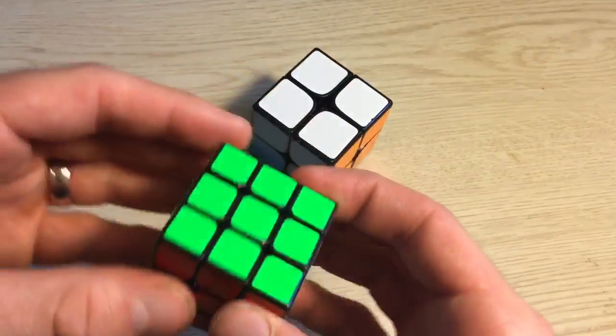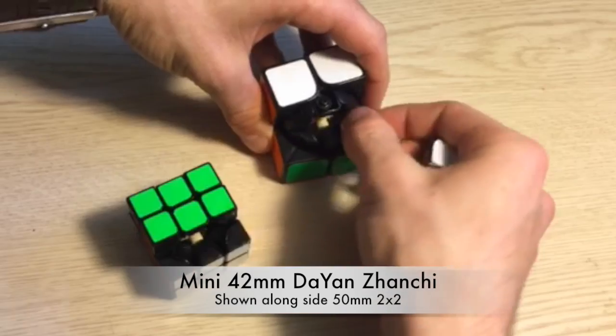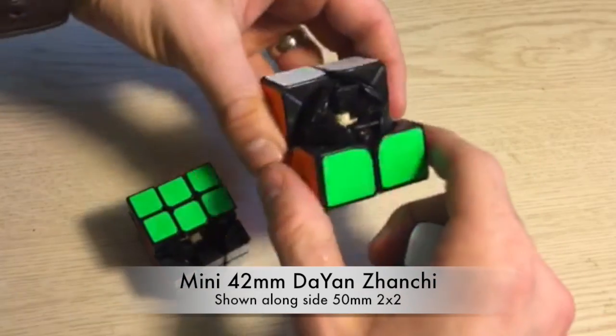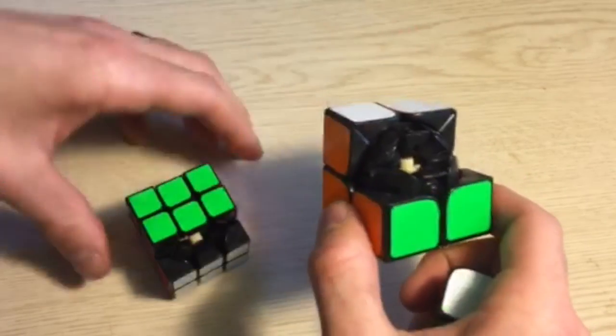Pretty much, a 2x2 is a 3x3. If we take apart the Dian 2x2 as well as the Dian Zanchi, we'll notice they are almost exactly alike.